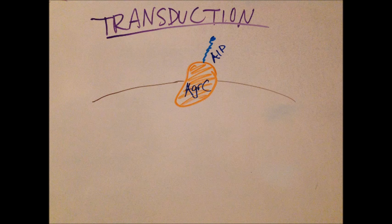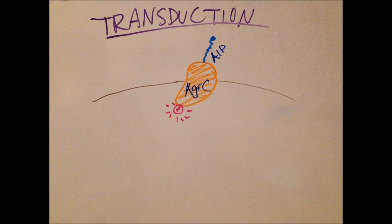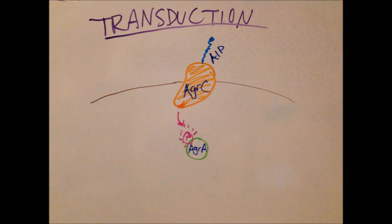After reception occurs, we move on to transduction. We can look at transduction as a sort of really tiny biological relay race. It consists of the processes that are activated by the binding of the little AIP to the AGRC receptor. When the AIP binds to the receptor, the receptor is phosphorylated on the side that's inside of the cell. The AGRC, in turn, phosphorylates something called AGRA.